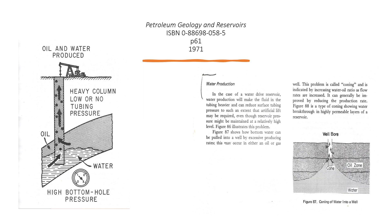Bottom water can be pulled into a well by excessive producing rates. This may occur in either an oil or gas well. The problem is called coning and is indicated by increasing water-oil ratio as flow rates are increased. It can generally be improved by reducing the production rate.